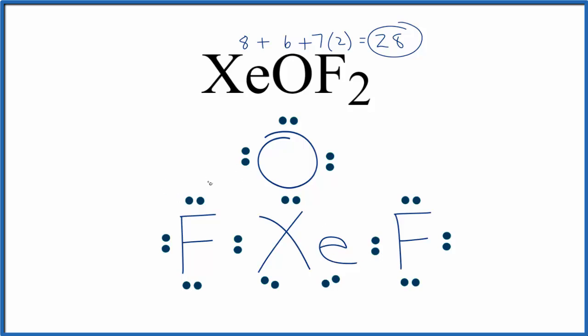The problem is, if we look at formal charges, the fluorines, their formal charges are 0. The oxygen here though, that's minus 1. And then the xenon has a plus 1 formal charge.